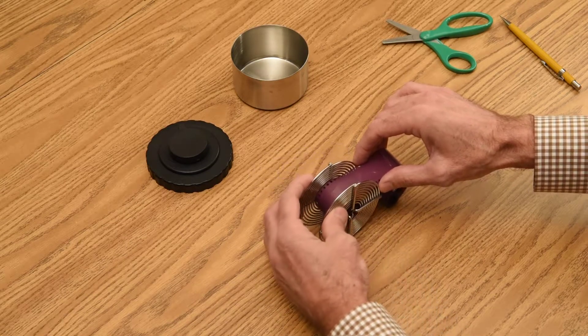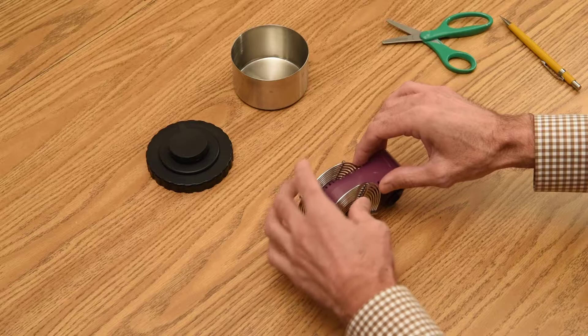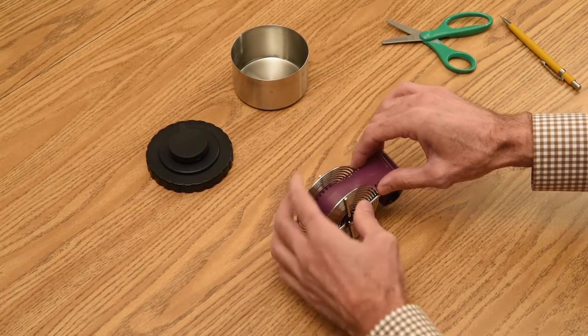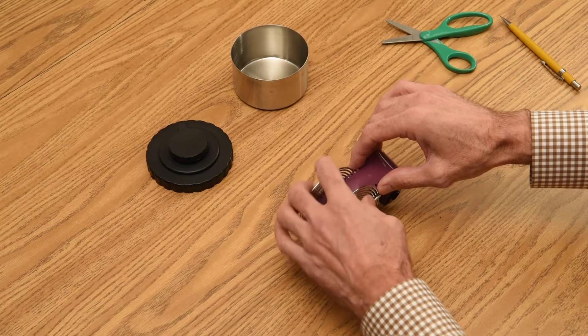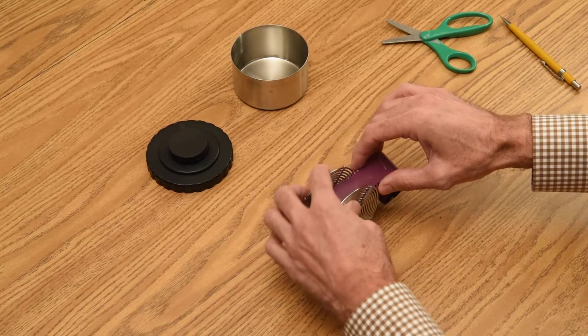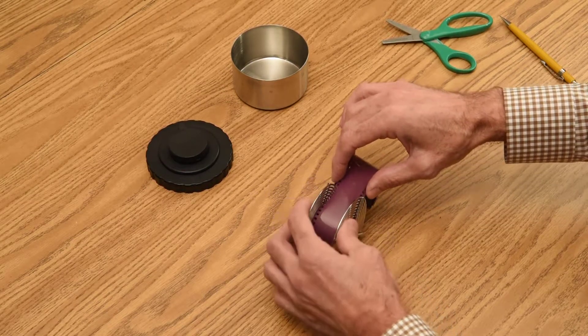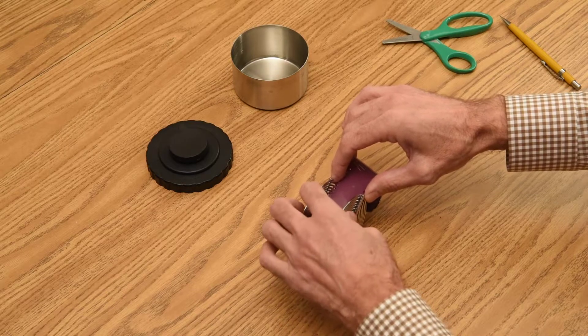You really want to get into a zen state when you do this, sort of be in a peaceful state of mind. If you get anxious about it, you'll find that you're more likely to damage the film. And then once you've damaged the film, it's very hard to roll onto the reel.